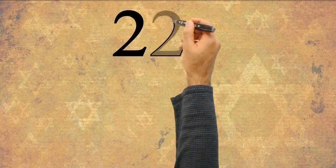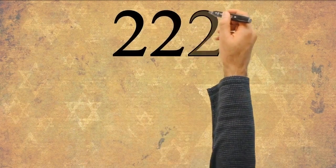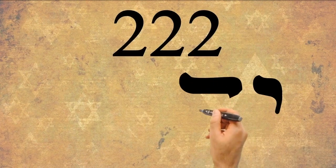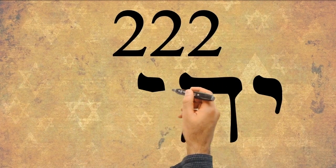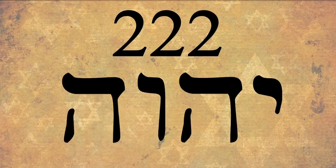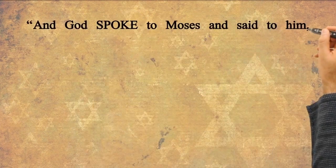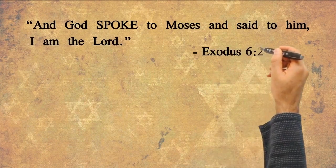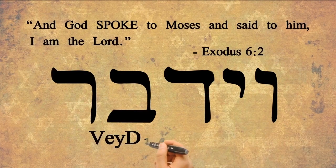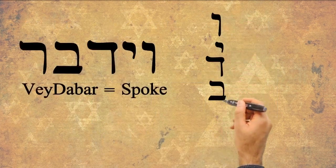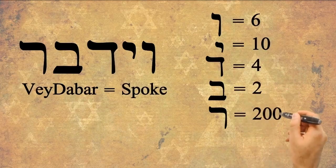Another significant place where the number 222 is found in the Bible is Exodus chapter 6, verse 2, when Moses encounters the Lord for the first time. God reveals His full name, Yod-Heh-Vav-Heh, Yahweh. And God spoke to Moses and said to him, I am the Lord. The word spoke in the original Hebrew text is V-Dabar, and it equals 222 in Gematria.